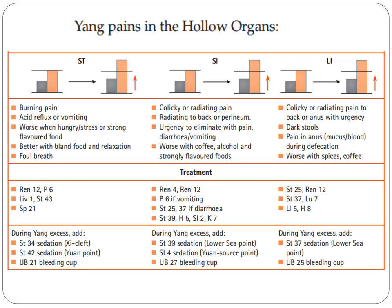During yang excess, aside from the points mentioned above, add Stomach 34 sedation — the Xi-cleft point of the stomach — then Stomach 43 sedation — the Ying-spring point — then UB21, bleeding cup.